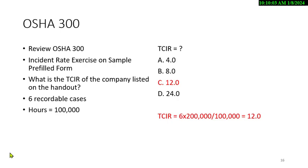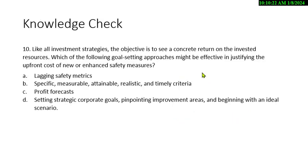The industry average for construction is around 2.7 to 3, and for manufacturing it's about 3, give or take about 0.3.